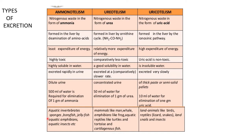Regarding water requirement: 500 ml of water is required for elimination of 1 gram of ammonia, 50 ml is required for 1 gram of urea, and only 10 ml of water is needed for 1 gram of uric acid. Aminotelism is present in aquatic invertebrates like sponges, bony fish, jellyfish, aquatic amphibians, and aquatic insects.